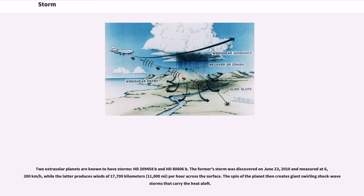The surface-obscured images contributed much to the collection of Mars atmospheric and planetary surface science. Two extrasolar planets are known to have storms: HD 209,458 b and HD 80,606 b. The former's storm was discovered on June 23, 2010 and measured at 6,200 km per hour, while the latter produces winds of 17,700 km per hour across the surface. The spin of the planet then creates giant swirling shock wave storms that carry the heat aloft.